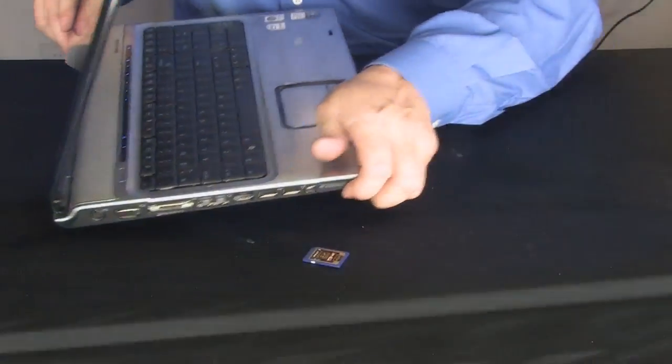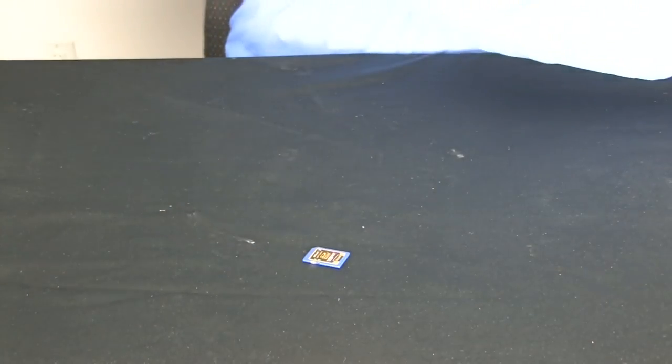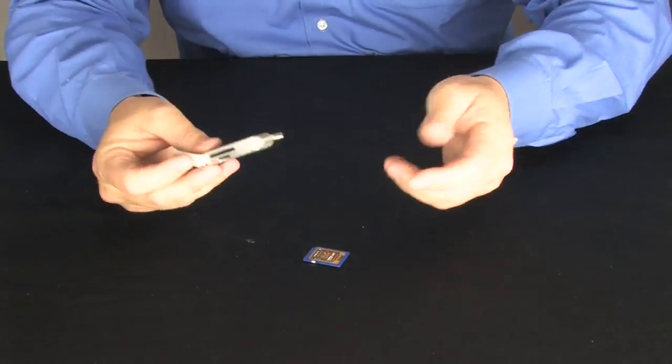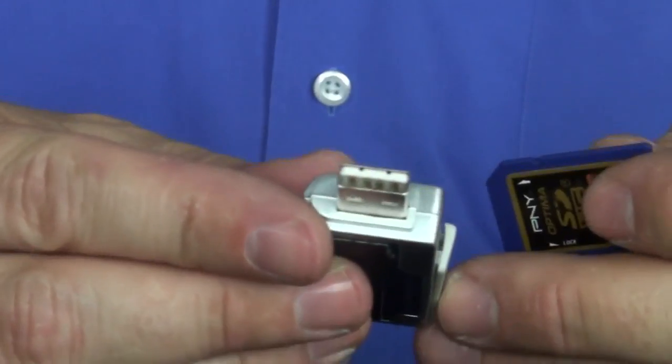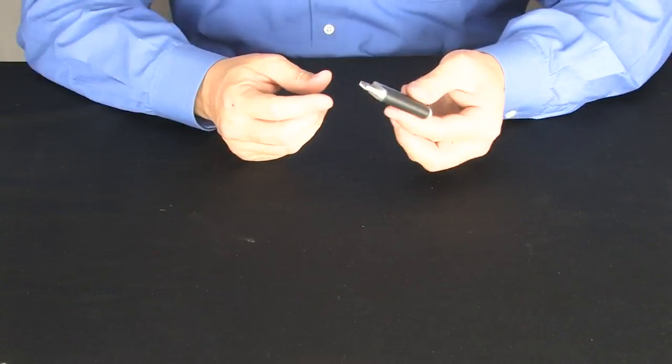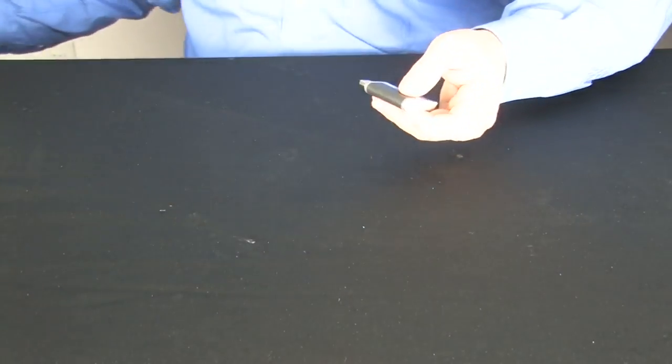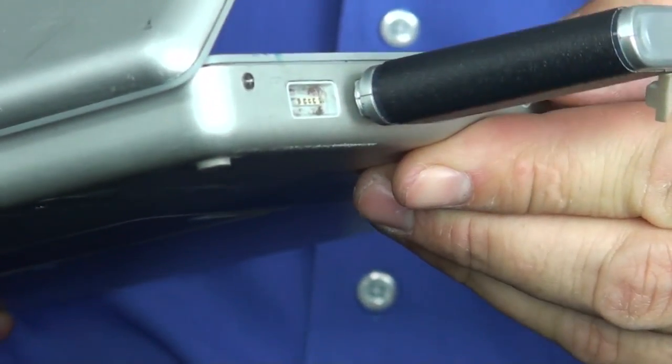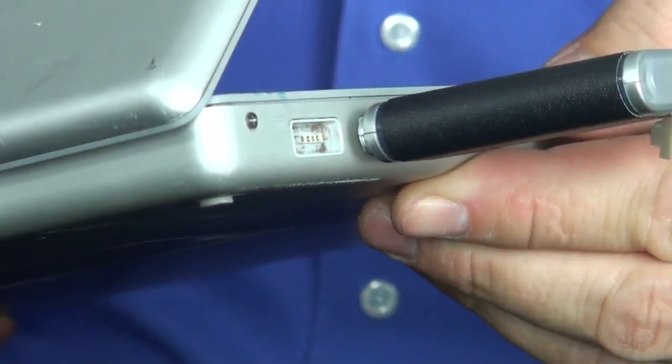Let me show you what you do in the instance where you happen to have a laptop that doesn't have an SD slot. You get a little reader, a little card reader like this. This happens to be a USB one. Slide the card right into the reader, and now this is compatible with a USB laptop. Slide it into your USB port on your computer and it'll come up just like any other card.